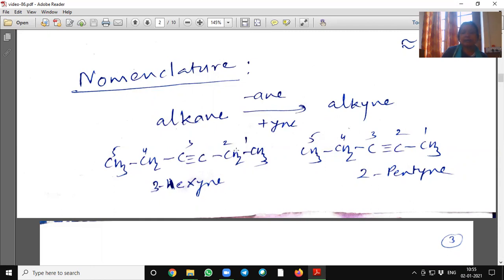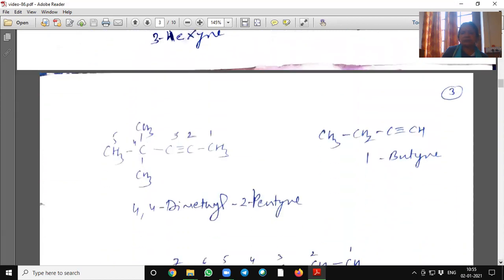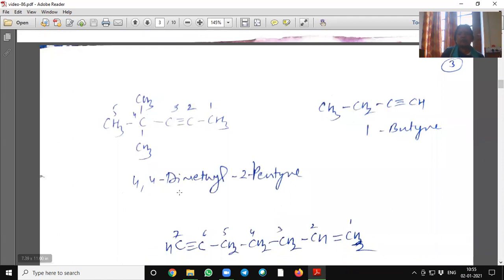It is 3-hexyne. 1, 2, 3, 4, 5, and 6. Whereas here, this is 2-pentyne. This is 4,4-dimethyl-2-pentyne.